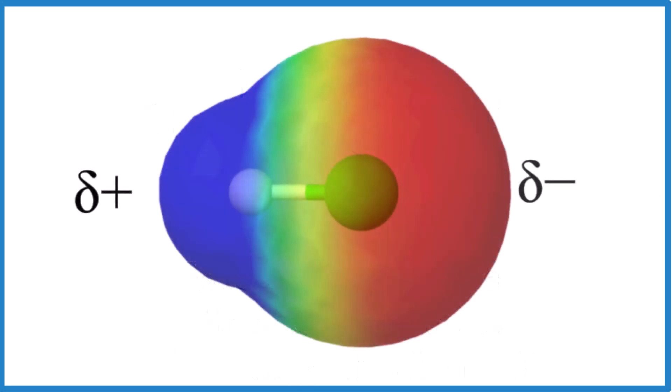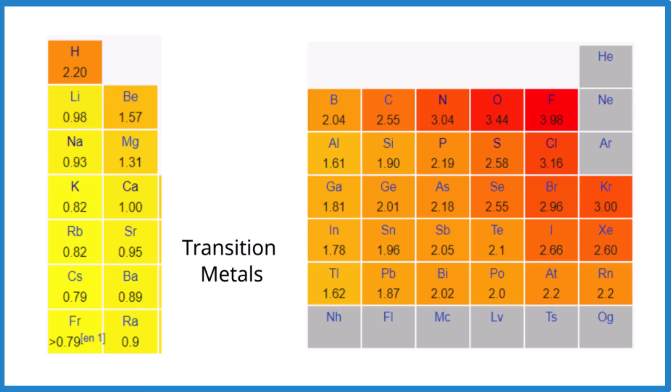Let's look at the trends for electronegativity on the periodic table. The easiest way to do this is remember that fluorine is the most electronegative. As we go across the periodic table towards fluorine, electronegativity increases. Oxygen is more electronegative than nitrogen, nitrogen more than carbon. When we go up a group towards fluorine, electronegativity increases. Fluorine is the most, then chlorine, then bromine and iodine down that group. That's the trend.